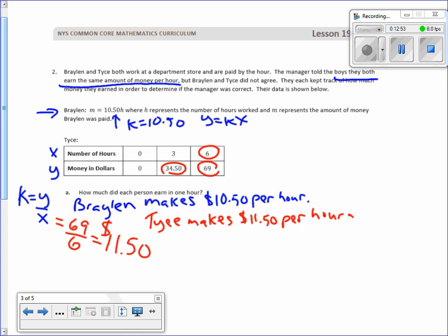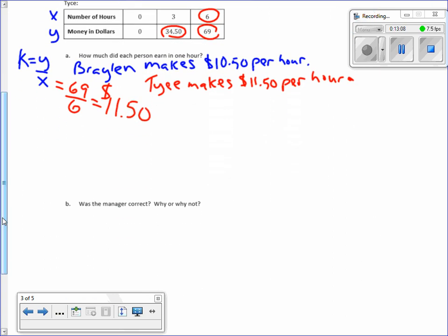So if I were these two guys, if I were Braylon, I'd be mad because my manager said I make the same as Tice and I don't. And at a 40-hour work week, he's making $40 more than me. Was the manager correct? No. Tice makes $1 an hour more.